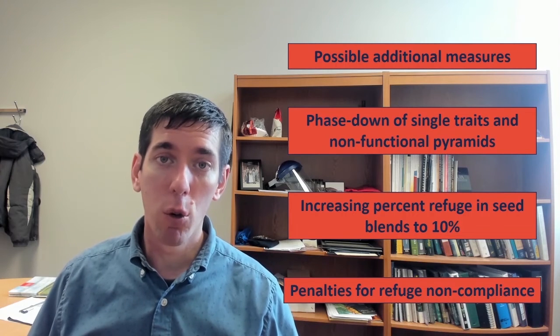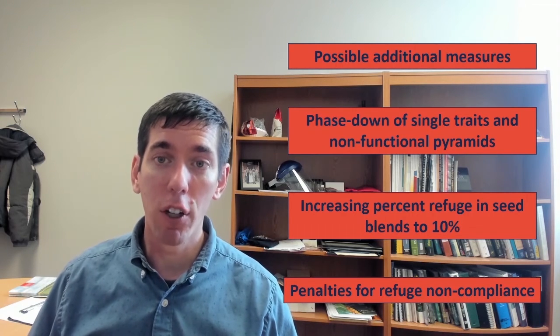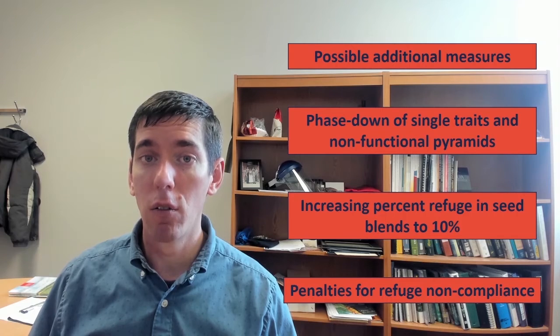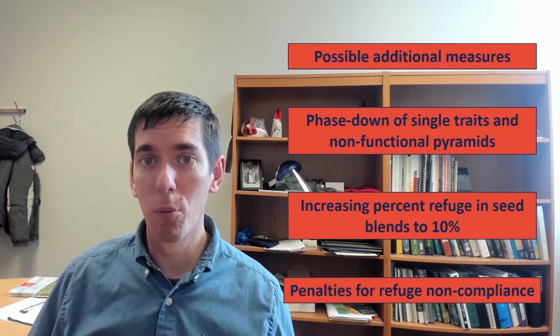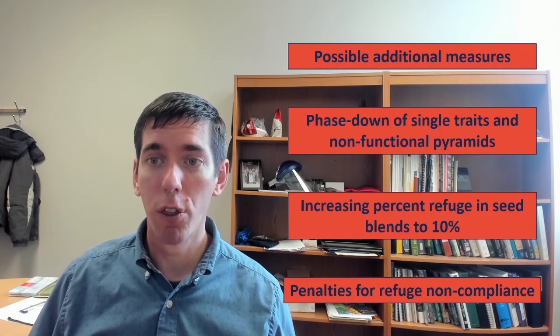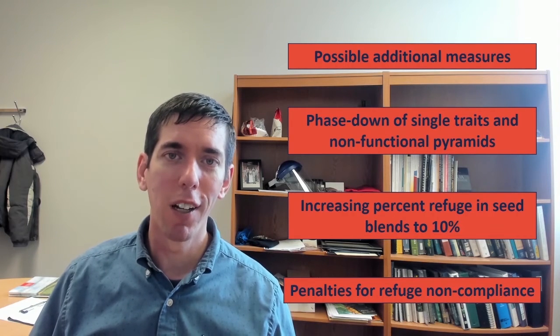If you're interested, there was a public comment period about these traits, and many of my colleagues and I put together a public comment with our thoughts on what the refuge requirements should be. That's available through the EPA's website. If you're interested in reading about the biology of these insects and the resistance management implications, feel free to check that out.